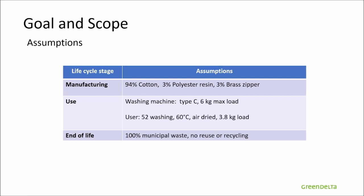Here is an overview of the assumptions we made for the study. For the manufacturing, the assumed composition of the sweater is 94% cotton, with the rest divided between the polyester resin and the brass zipper. For the use stage, it is a type C machine with a maximum load of 6 kg. The sweater is washed 52 times in total at 60 degrees and it is air dried, with 3.8 kg of clothes loaded in the washing machine every time. Regarding the end of life, it is assumed that the product is treated as municipal waste, which implies no reuse or recycling.